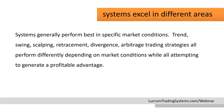Systems excel in different areas and generally perform best in specific market conditions. You have trend following, swing trading, scalping, retracement, divergence, arbitrage — all various trading strategies that perform differently depending on market conditions, while all attempting to generate a profitable advantage. There are case studies of basically all of these different system styles being successful, but they're generally only going to be successful in specific market conditions, and there's always going to be a market cycle where they perform very poorly.